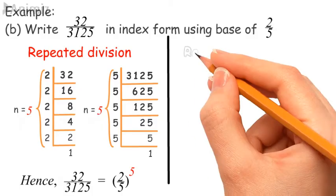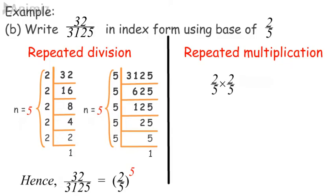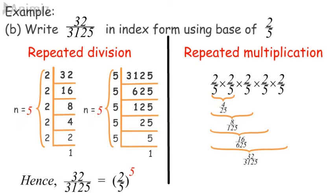Using the repeated multiplication method, multiply (2/5) repeatedly. Multiplication continued until 32/3125 is obtained. The number of multiplications is 5. Hence, 32/3125 = (2/5)^5.